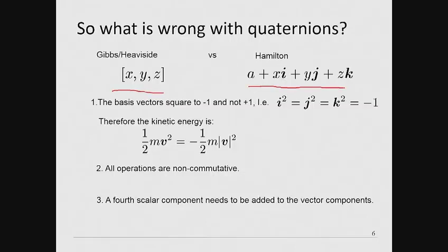One of the problems Heaviside refers to derives from the fact that the basis vectors i, j, k all square to negative one. This has the consequence that squaring a vector will give the negative of the Pythagorean length. This then means, for example, that the kinetic energy will be negative. Strange indeed.